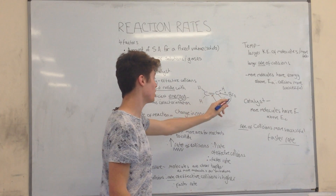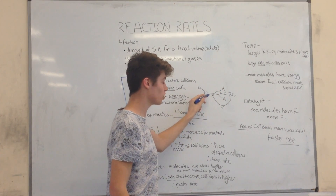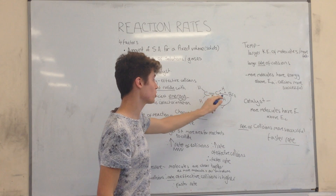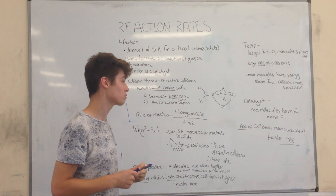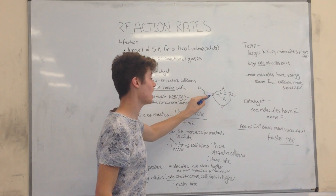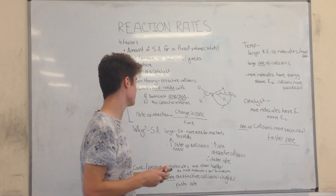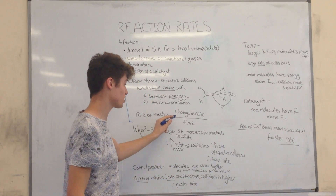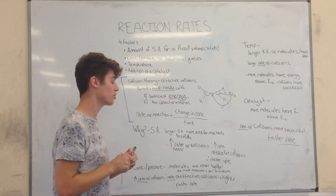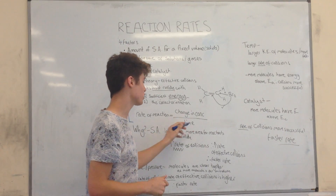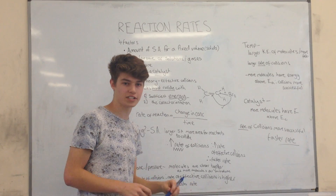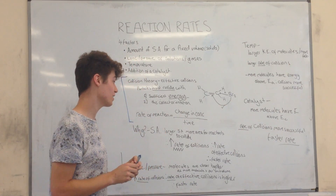This is demonstrated quite nicely by this reaction between an ethene molecule and a bromine molecule. If the bromine molecule were to hit the ethene molecule here, it's unlikely that it will be able to react. But if the bromine molecule were to hit the ethene at the double bond, it's likely for it to react. We define the rate of reaction in terms of the change in concentration of the reactant or the product over the time that the reaction occurs. When a reaction is occurring, you're either getting a decrease in reactants or an increase in products.